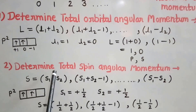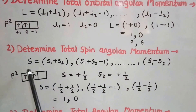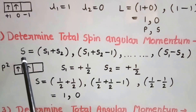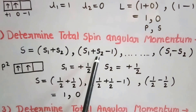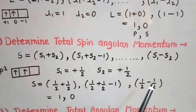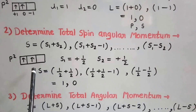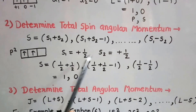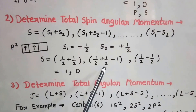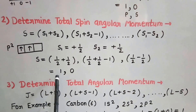The next step is to determine the total spin angular momentum S, obtained by vectorial combinations of the spin angular momenta of the electrons. S will be S1+S2, S1+S2−1, and so on down to S1−S2. For the P2 state with two electrons both having the same spin, S1=+1/2 and S2=+1/2. The vectorial combination gives 1/2+1/2, 1/2+1/2−1, and 1/2−1/2. So we get two spin states: S=1 and S=0.